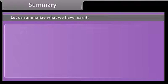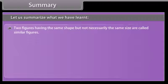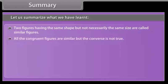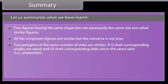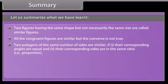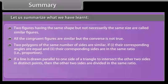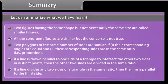Summary: Two figures having the same shape but not necessarily the same size are called similar figures. All congruent figures are similar, but the converse is not true. Two polygons of the same number of sides are similar if: one, their corresponding angles are equal, and two, their corresponding sides are in the same ratio (proportion). If a line is drawn parallel to one side of a triangle to intersect the other two sides in distinct points, then the other two sides are divided in the same ratio. If a line divides any two sides of a triangle in the same ratio, then the line is parallel to the third side.